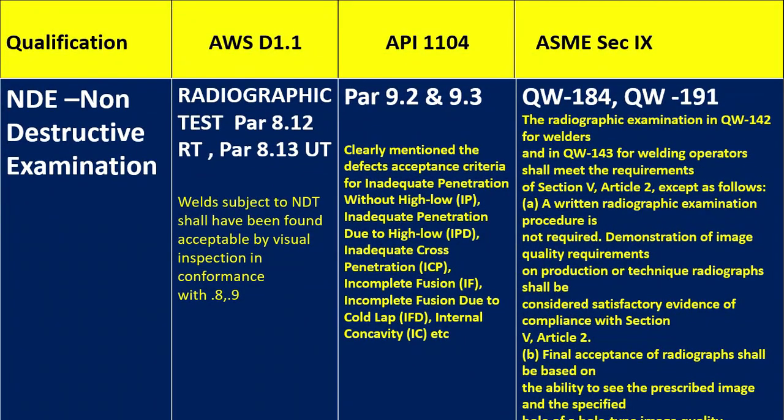Next is the non-destructive examination. For radiographic testing go to para 8.12 RT, and for UT go to para 8.13. The weld subjected to NDT shall have been found acceptable by visual inspection in accordance with 8.9. For API 1104, para 9.2 and 9.3 clearly mention the defect acceptance criteria, including inadequate penetration without high-low, inadequate penetration due to high-low, incomplete fusion, incomplete fusion due to cold lap, and internal concavity.